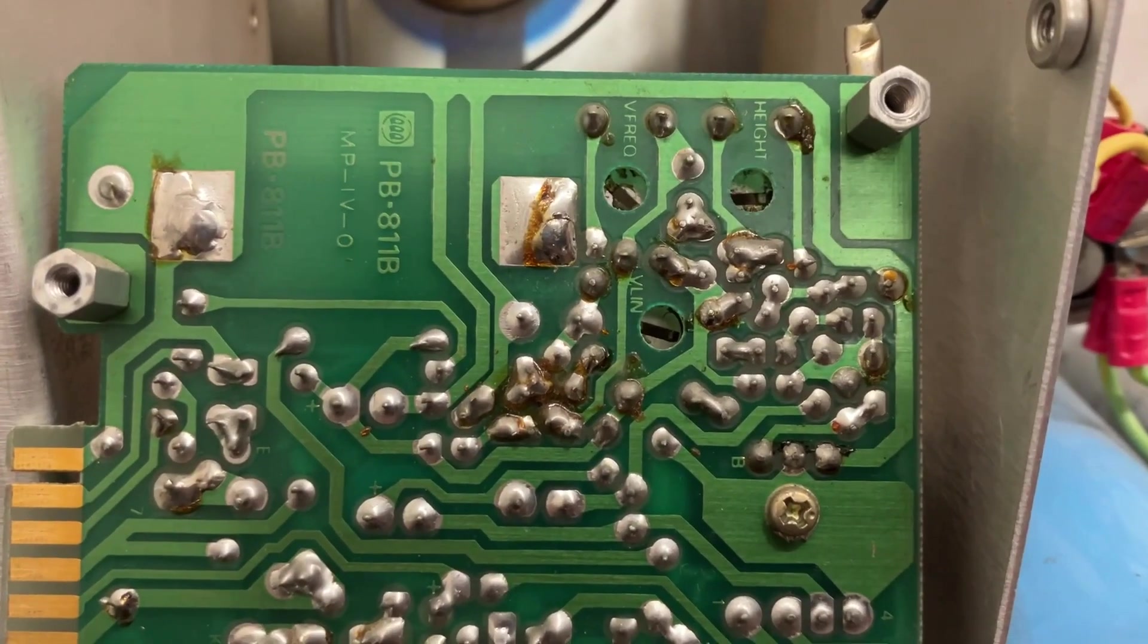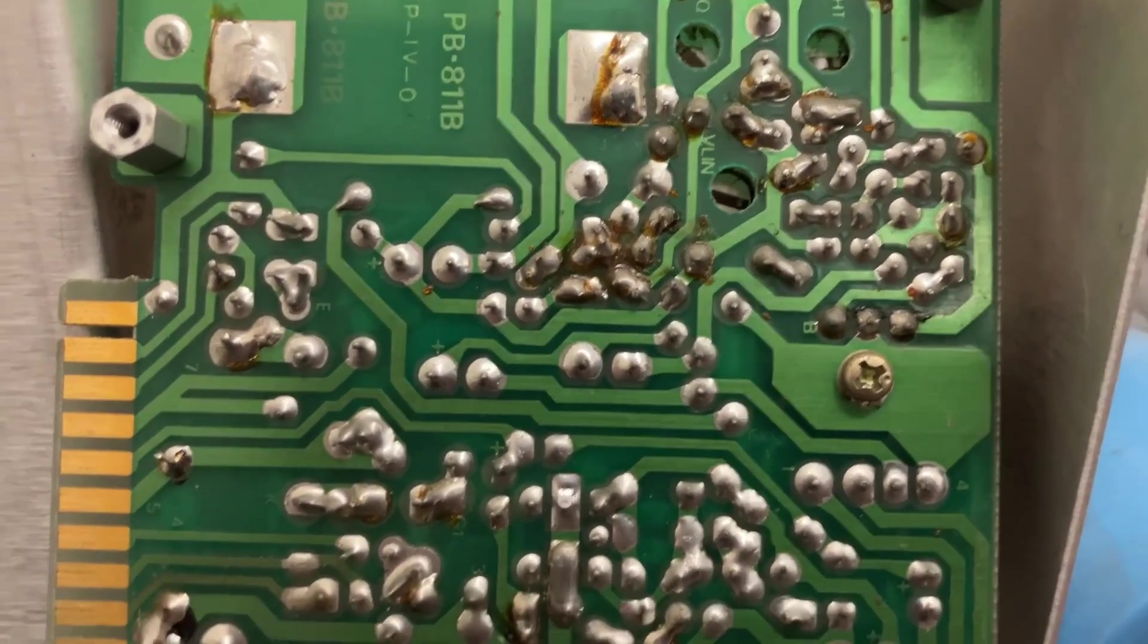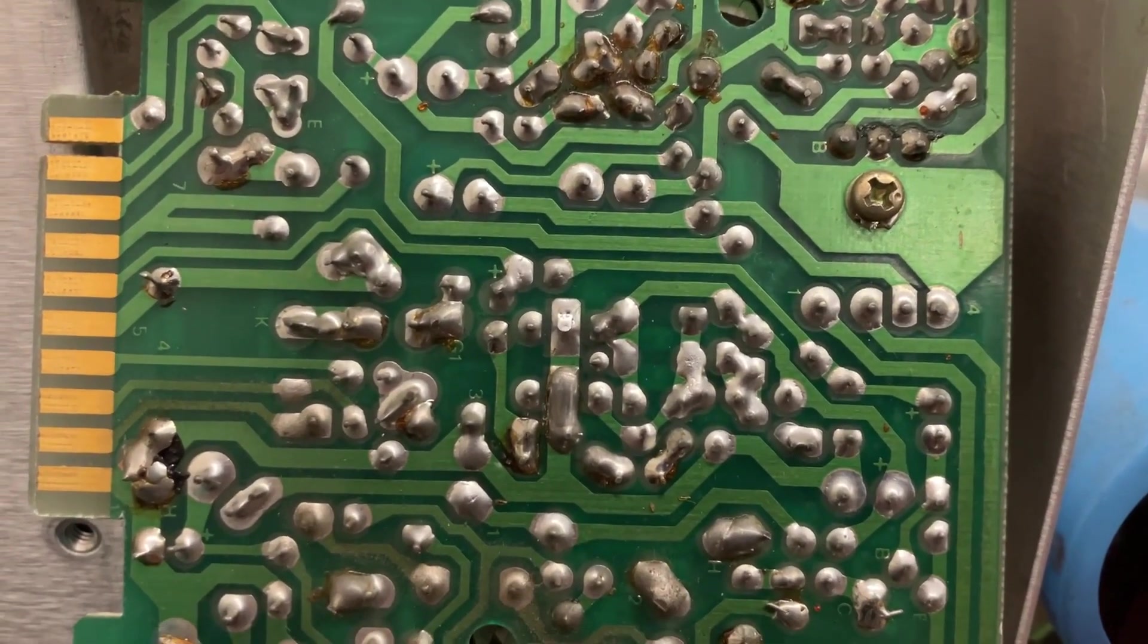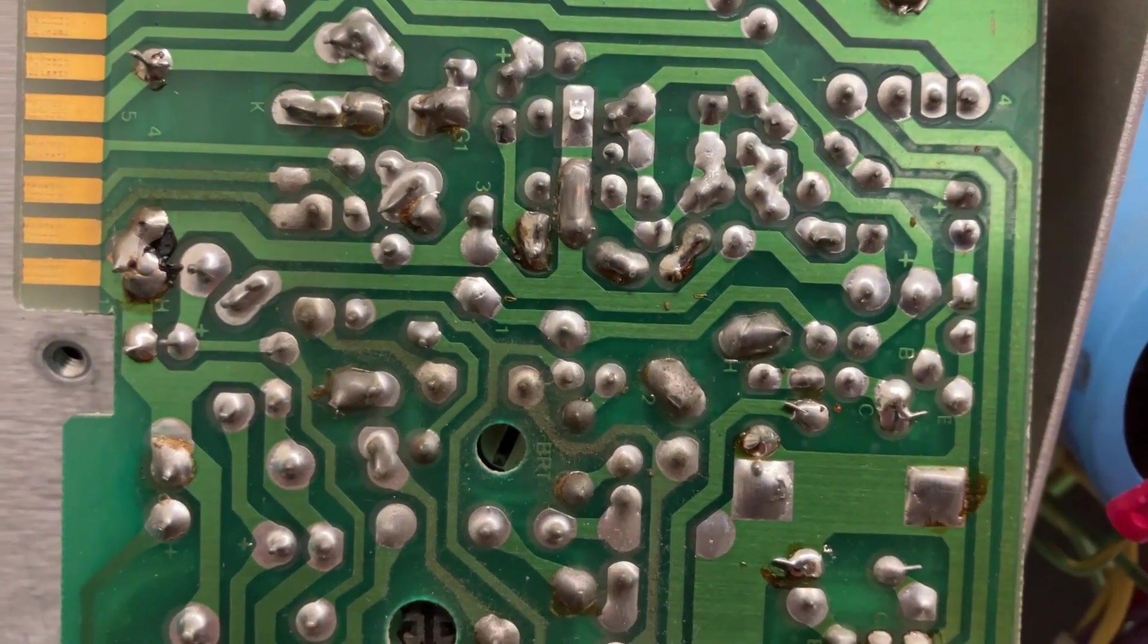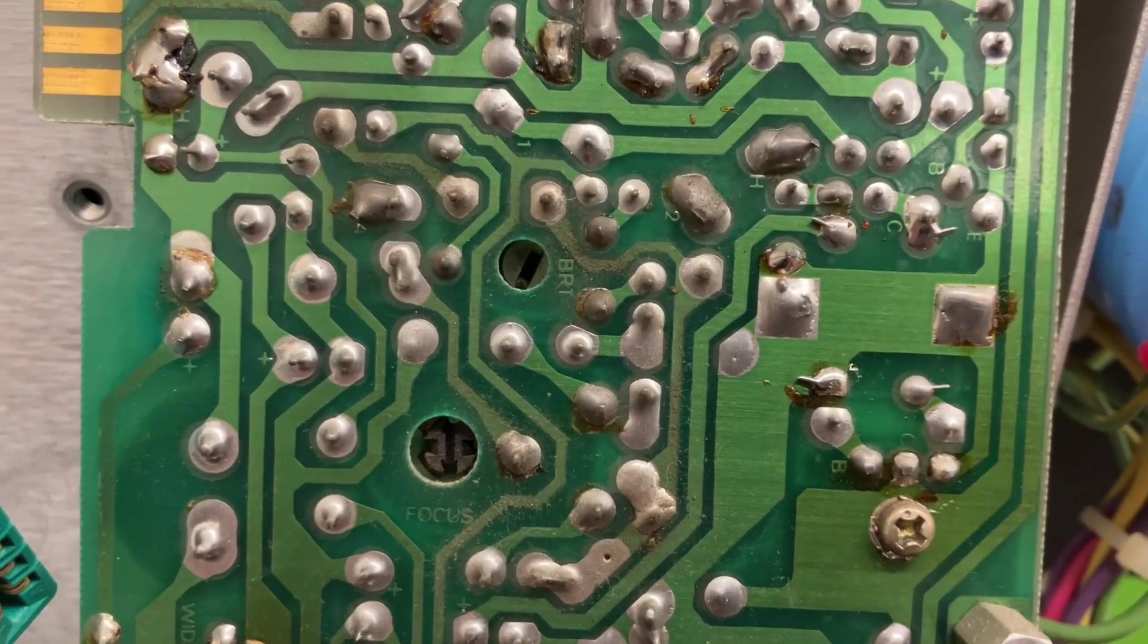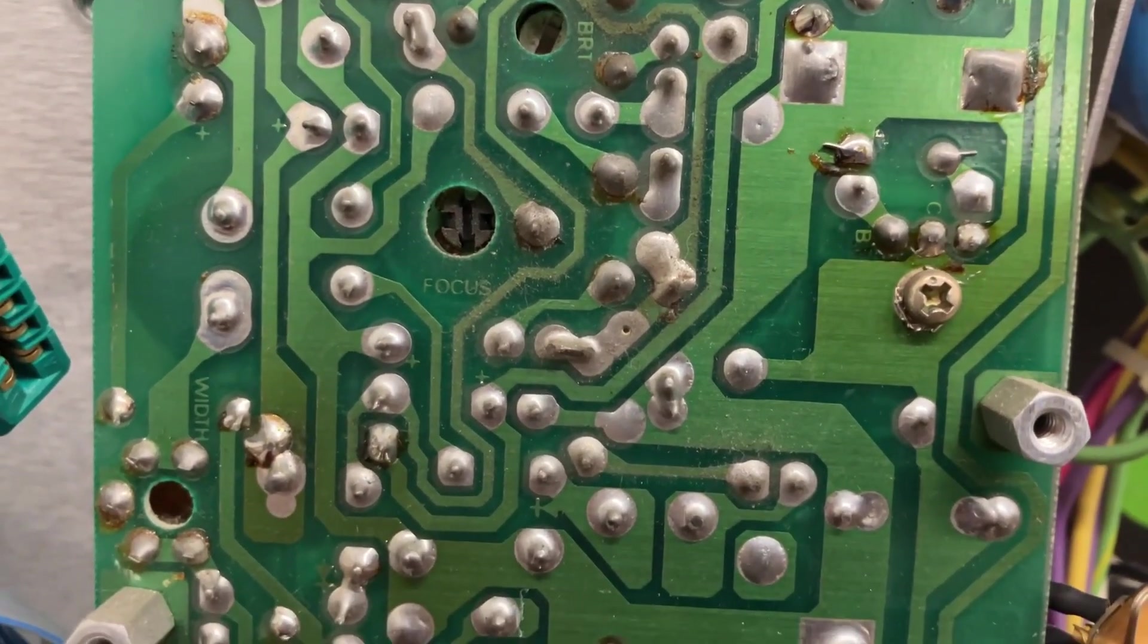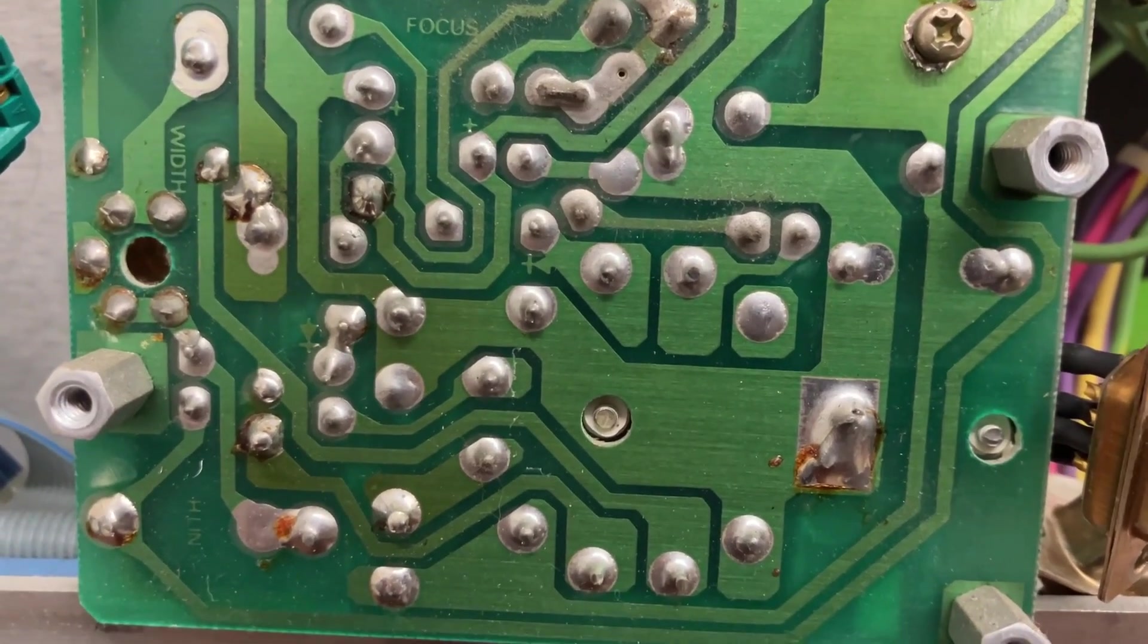So finally here's the back of the PCB. Let me know if you see anything that looks particularly dodgy. Some of these could probably use reflowed, but I don't want to just start randomly taking soldering iron to it without some sense of where I should be looking first.